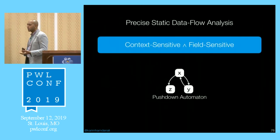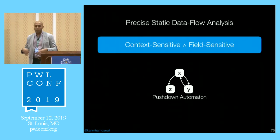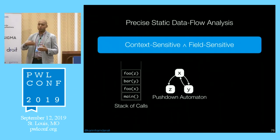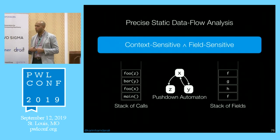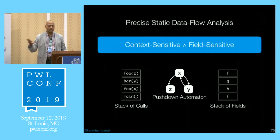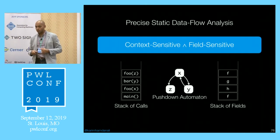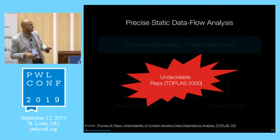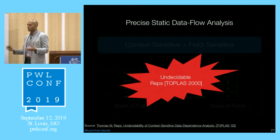One way to obtain both context sensitivity and field sensitivity is through pushdown automata. You represent variables as a pushdown system with two stacks: one for call stack (method calls are pushes, returns are pops), and another for field accesses (writes are pushes, reads are pops). By maintaining both stacks, your pushdown automata can have both context sensitivity and field sensitivity. However, that problem is again undecidable — a 2000 TOPLAS paper by Tom Reps explains why it reduces from the halting problem.